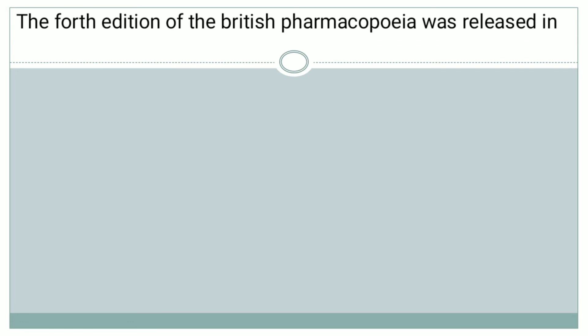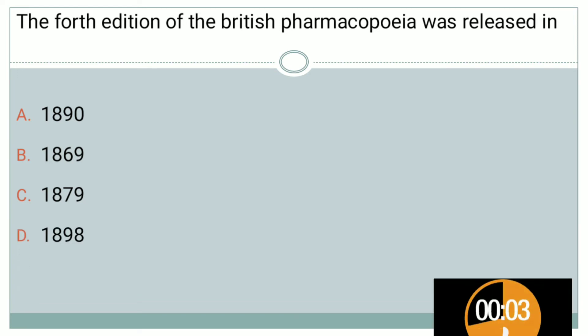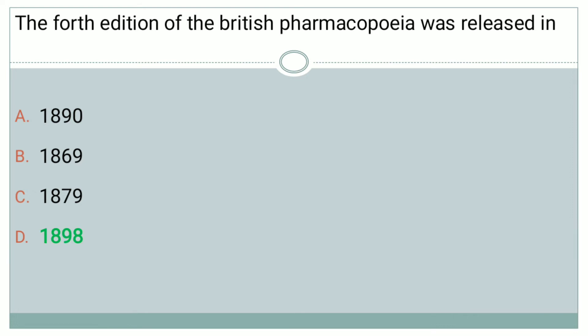The next question: The 4th edition of British Pharmacopeia was released in — Option A: 1890, Option B: 1869, Option C: 1879, Option D: 1898. The right answer is Option D, that is 1898, when the 4th edition of British Pharmacopeia was released.